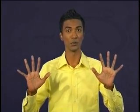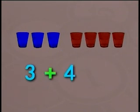Let's look again at the types of addition we learned earlier in this episode. If we have two groups of things and want to find the total, we just add them up. For example, if I have three blue glasses and four red glasses, how many glasses would I have altogether? Yes! We add them. Three plus four equals seven. I will have a total of seven glasses.